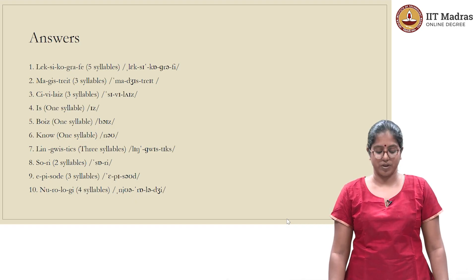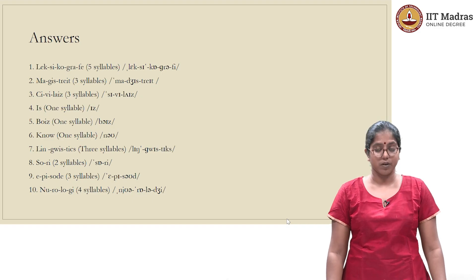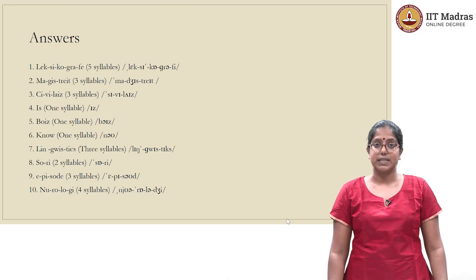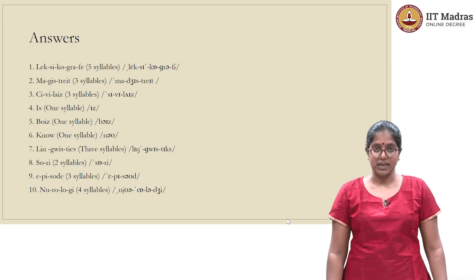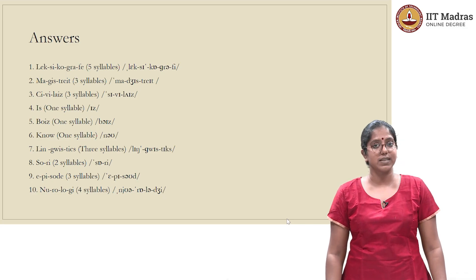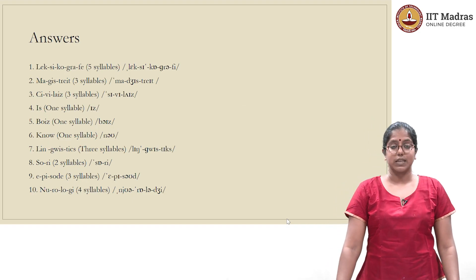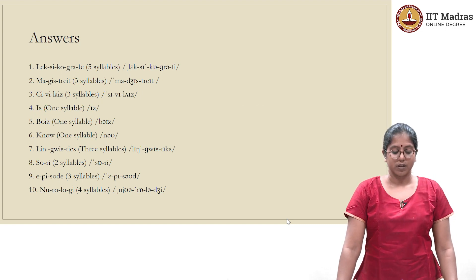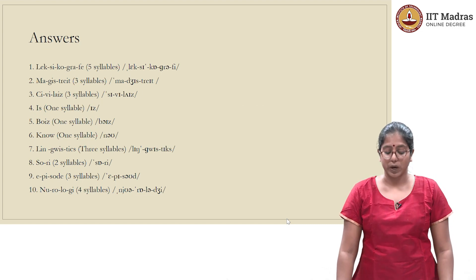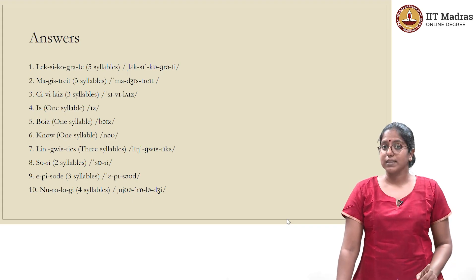The second word is magistrate — it is a three-syllabled word. The third word is civilize: ci-vi-lize, so it is a three-syllabled word. The fourth word is ease — it is a one-syllabled word. The fifth one is boys, and it is also a one-syllabled word. This is slightly tricky — some of you might have divided the word into two syllables looking at the vowel letters.